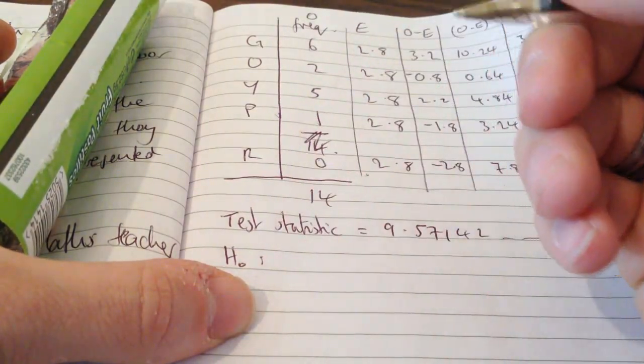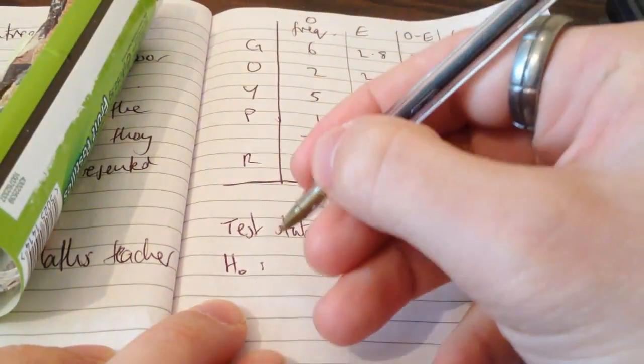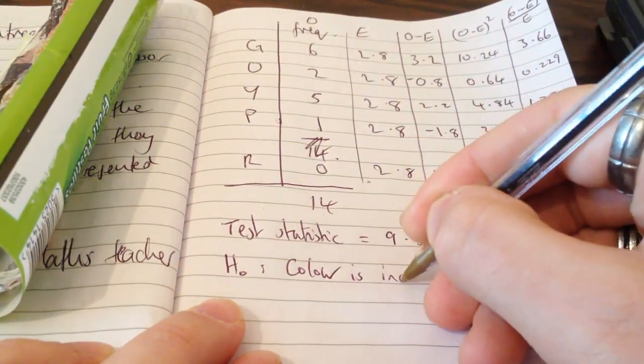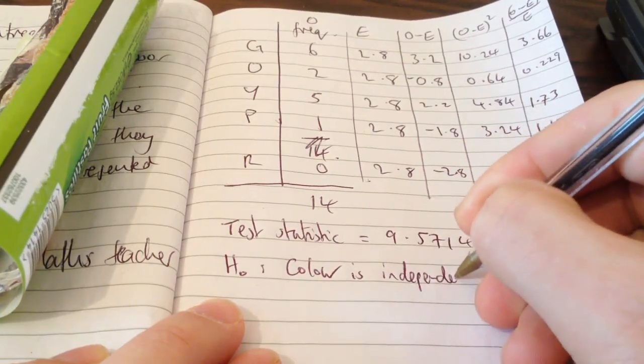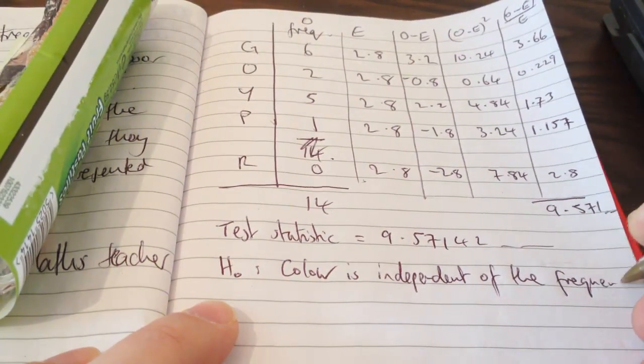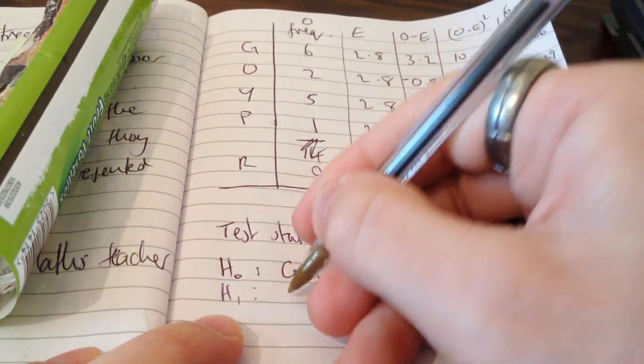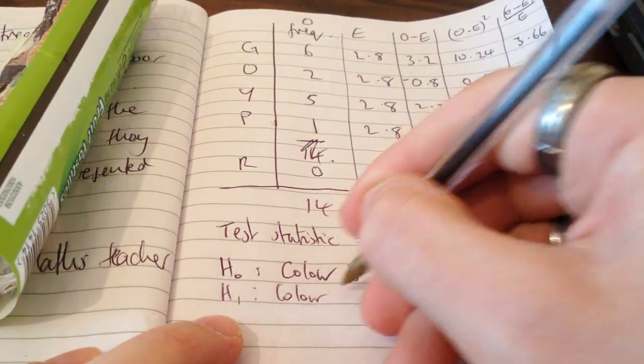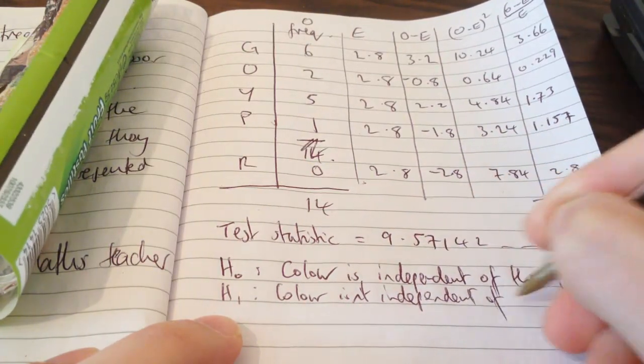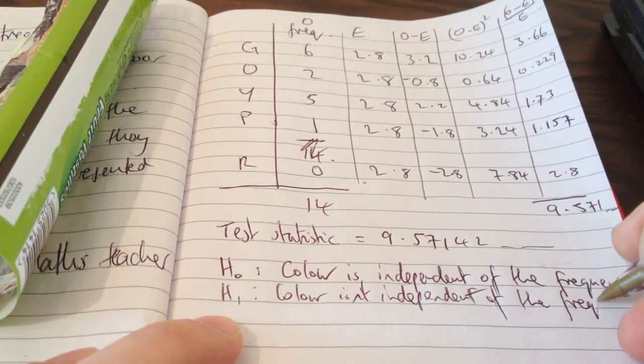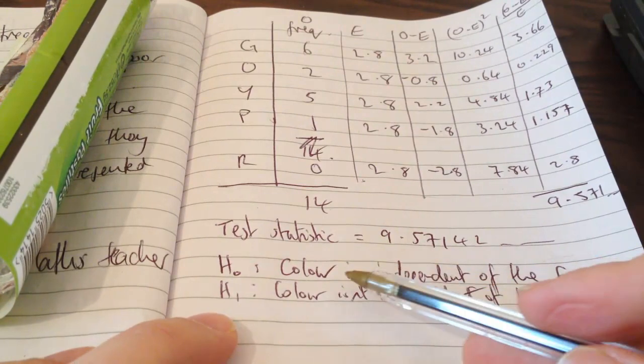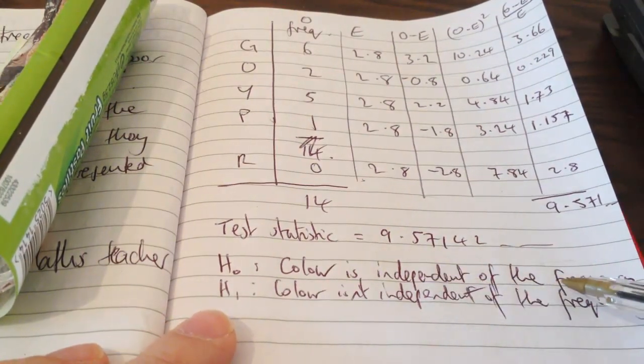Just chuck a couple of hypotheses. My null hypothesis is that the sweets are fairly distributed, if you like. So the colour is independent of the frequency. And my alternate hypothesis then is that the colour isn't independent. Essentially I'm saying that H0, my null hypothesis, is that there's nothing strange going on. The colours are not unusually distributed for what I would expect.